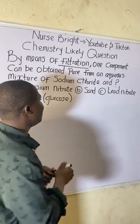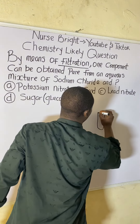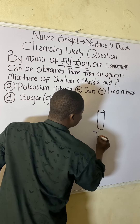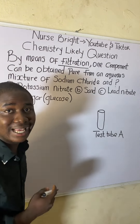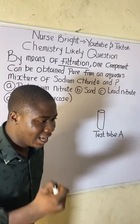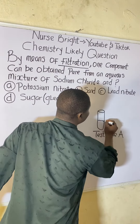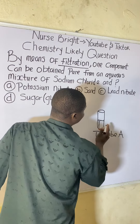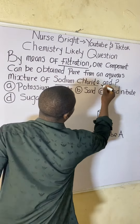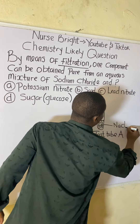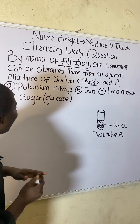Imagine test tube A containing two substances you can physically see. Let's say sodium chloride — chemical formula NaCl — is one of the substances at the bottom of test tube A. This will help us visualize what happens when each option is mixed with sodium chloride.